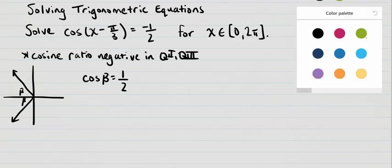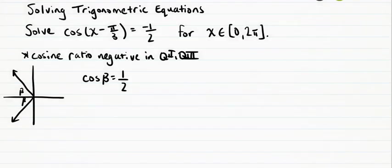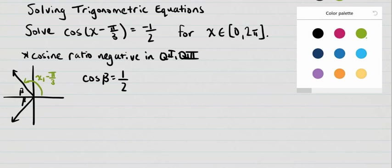On my diagram I'm going to label my two solutions. The first one in quadrant 2 is x1 minus pi over 3, because that's the entire angle here. I want to make sure I'm considering that minus pi over 3 part when I solve for x1, similar to our example with double angles.